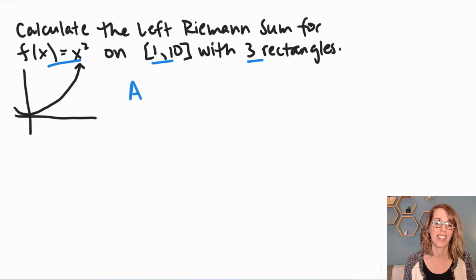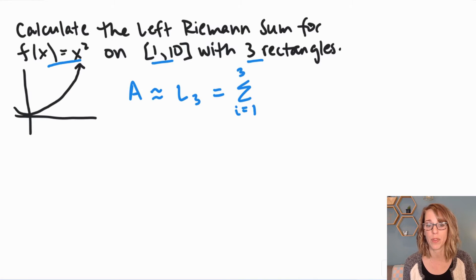So this area is going to be approximated by L sub 3. I'm going to write this generically first. i equals 1 to 3 for three rectangles. And then I want my height, h sub i times my width.